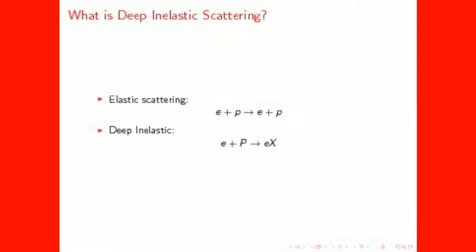The concept of elastic scattering is that we start with a proton and an electron, and end with a proton and electron. In deep inelastic scattering something else occurs. The electron interacts with something inside the proton called a parton, causing the proton to fragment into different hadrons, labeled here by X.